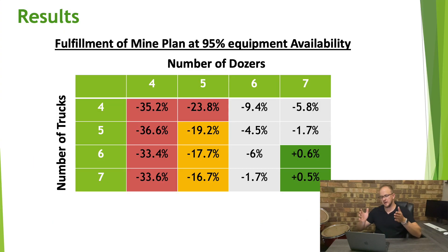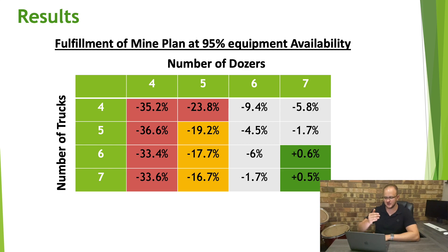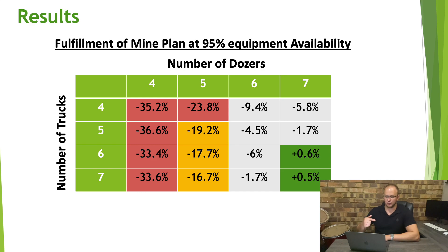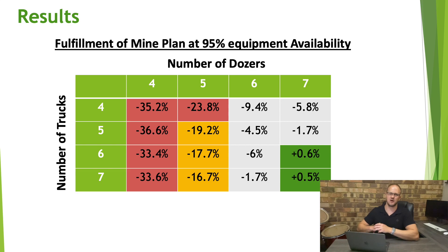Once we've completed the analysis, a matrix is displayed showing the number of dozers against the number of trucks. With too few dozers and trucks you are 35% behind your plan, but as you gradually increase both, you reach a point of plus 6% fulfillment rate at 95% equipment availability. Interestingly, increasing trucks from six to seven doesn't yield the same improvement as previous increments — there's actually a slight decrease of 0.1%, due to congestion building up inside the mine. So we determine that six trucks and seven dozers is optimal.